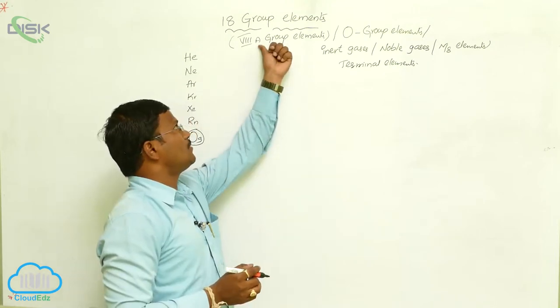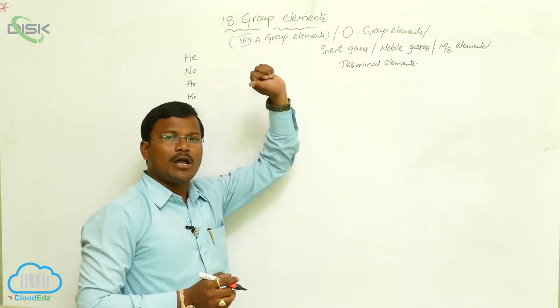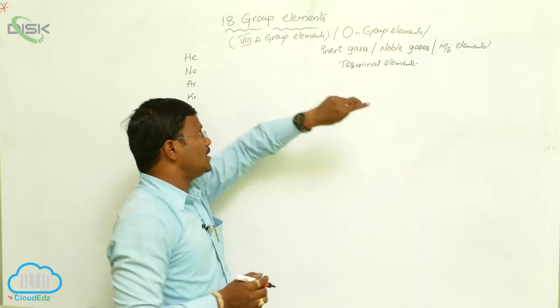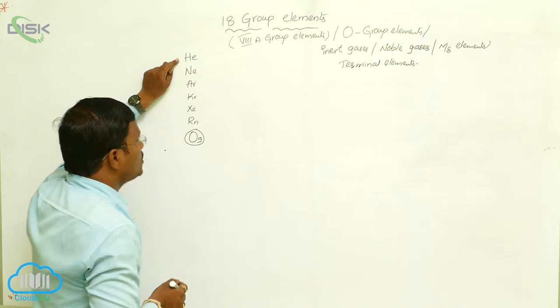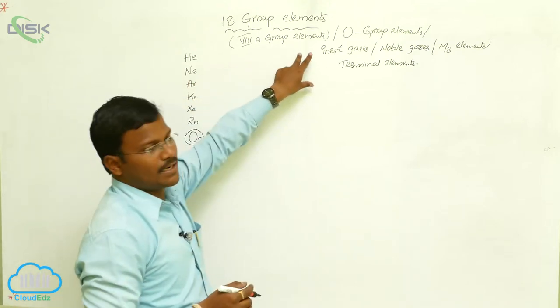Whereas S block, P block elements come under A category, D block elements come under B category. As the last electron is present in P orbital, so all these elements belong to P block category.